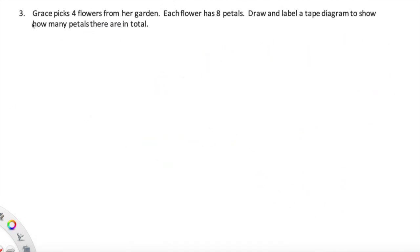I was really excited to see this problem because this problem actually stars a kiddo in your class. This problem is about Sage. Sage picks 4 flowers from her garden. I wonder what kind of flowers they are. Each flower has 8 petals. I'm going to underline the numbers because they're important, but I'm going to keep reading. Draw and label a tape diagram to show how many petals there are in total. So something that is so important, friends, when we are reading and working on these word problems is that we understand the problem fully before we begin to solve.